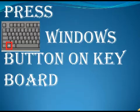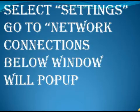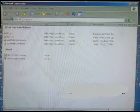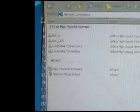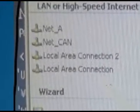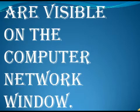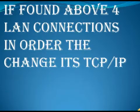Press the Windows button on the keyboard. Select Settings, then go to Network Connections — a window will pop up listing all available network connections. Check if Net A, Net B, Net CAN, and Net C are visible in that window.